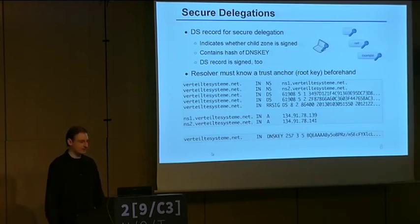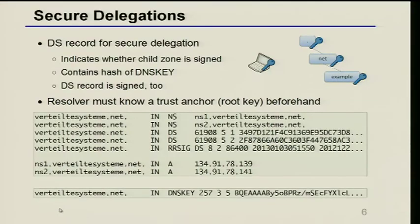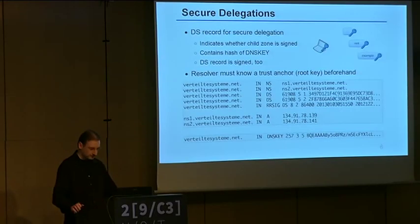Here is an example of a secure delegation. We have a referral from the .net top-level domain to some name server, and there is a DS record. A DS record indicates that this is a secure delegation and contains a hash of the public key. The resolver can go to the next name server, retrieve the public key, hash it, and compare: does the DS record fingerprint match? And of course this DS record is also signed, otherwise it would be useless.